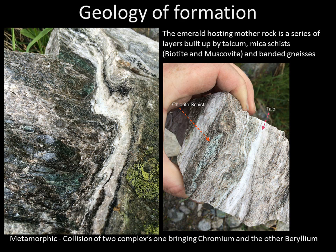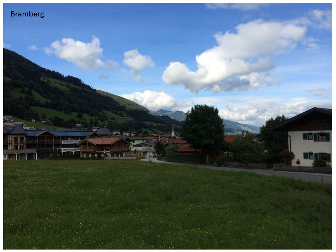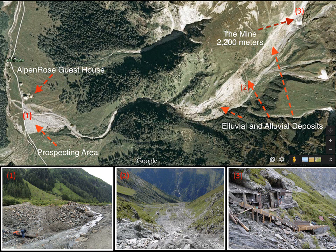Regarding the geology of the mine: when you get up there, there's a lot of chlorite schist and talc. The emeralds are found in the schist. It's believed to be a metamorphic deposit — the collision of two mountain complexes, one bringing beryllium and one bringing chromium, with heat and pressure giving rise to the emeralds. The village of Bramberg sits below, and from there you hike or take a bus up to the alpine guesthouse, the Alpenrose, with the mine itself at an elevation of about 2,200 meters.